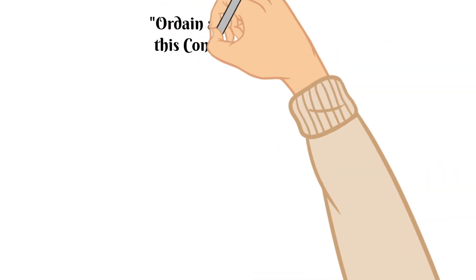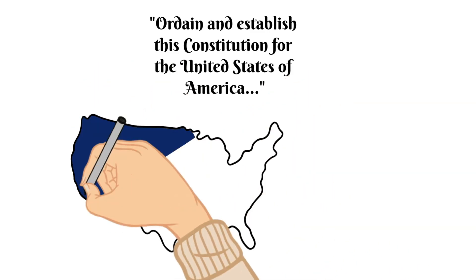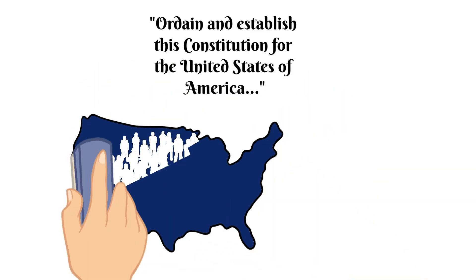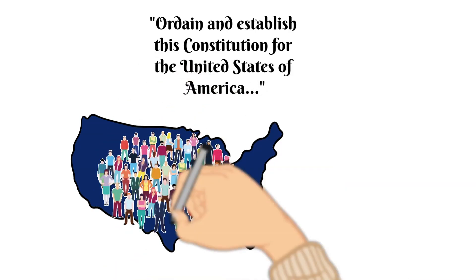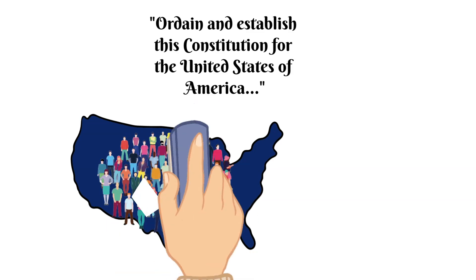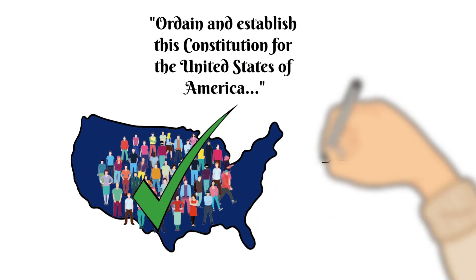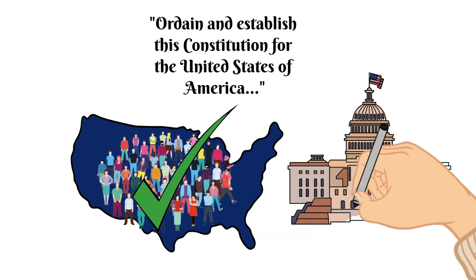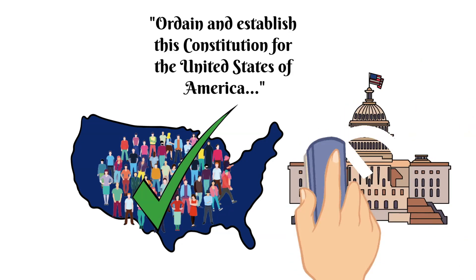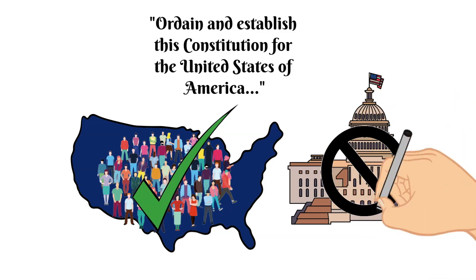And then it says 'ordain and establish this Constitution for the United States of America.' Many historians believe that this is a very strong statement in the preamble. It says it is the citizens of the United States who give the Constitution its power, not the government. The Founding Fathers who wrote the preamble to the Constitution have inspired generations of American citizens with the motive behind what the Constitution was trying to provide for our country.